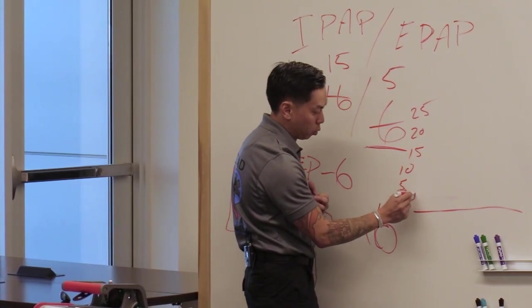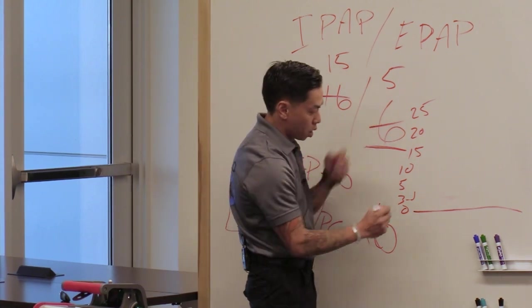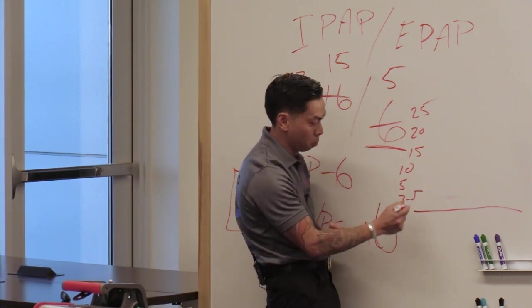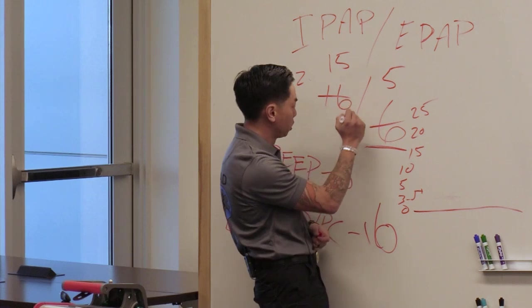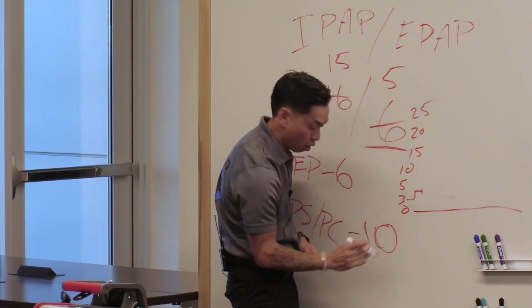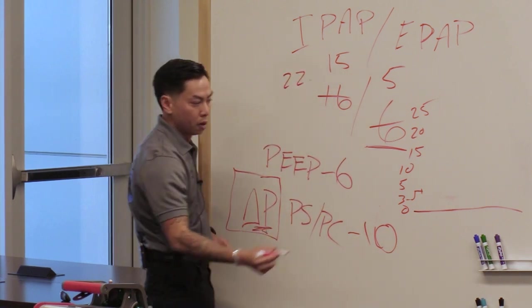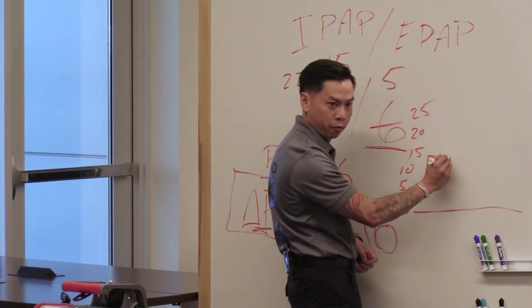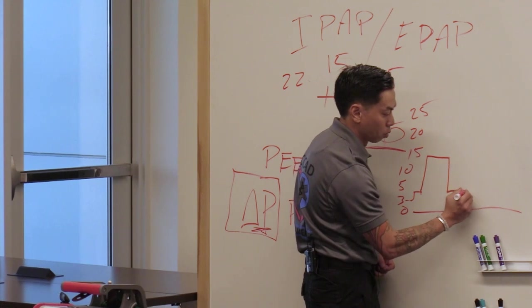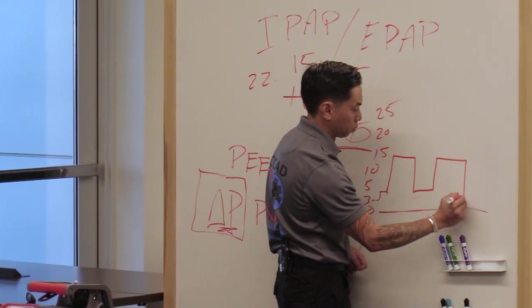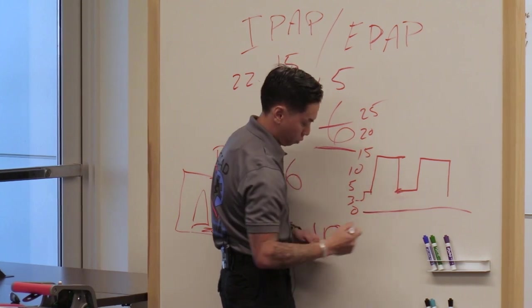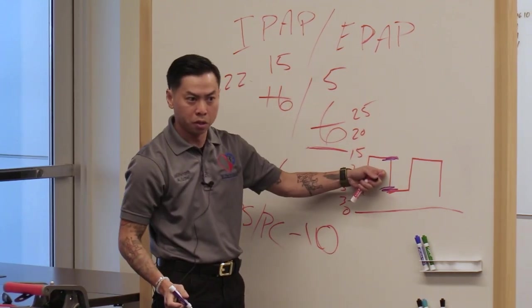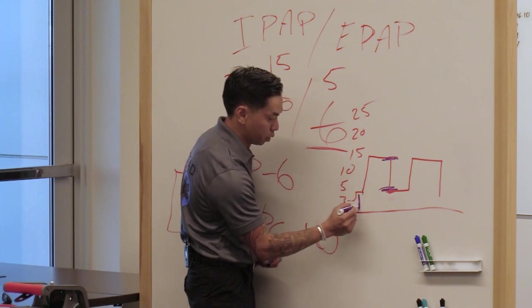So exhalation. I trigger a breath, I'm ready to inhale. Ventilator's like, deal, I'm going to give you 10 of pressure more, the difference over PEEP. So triggers the breath, it shoots up 10, it holds up for the inspiratory phase, drops back down to 5. Trigger a breath.